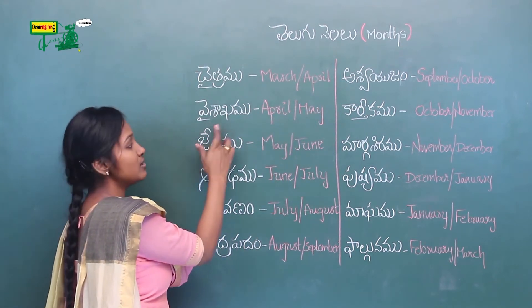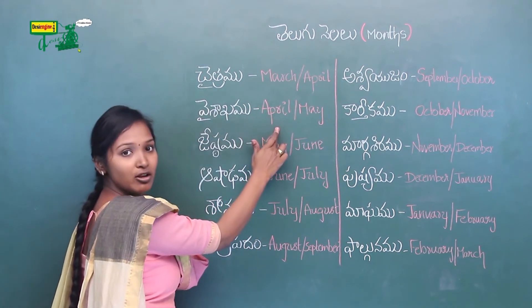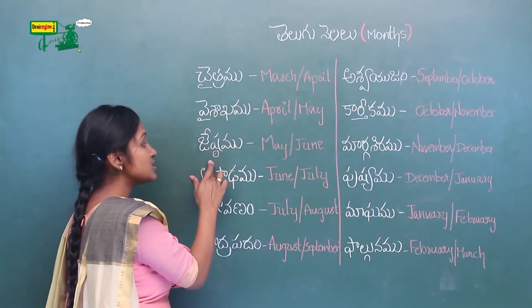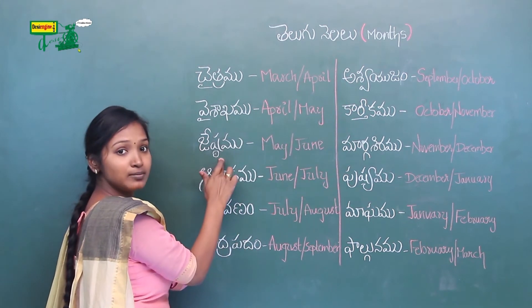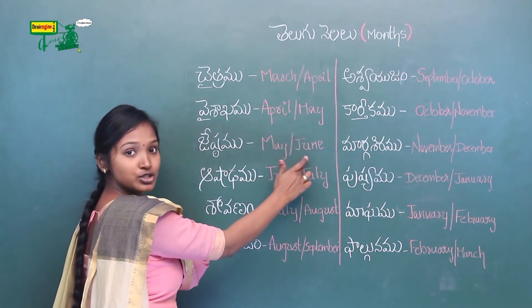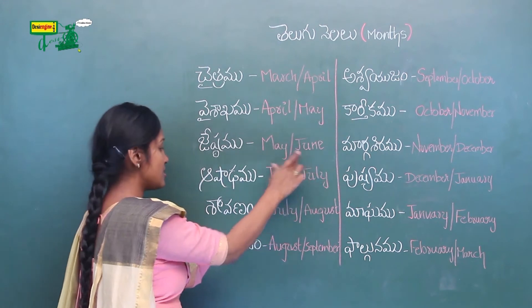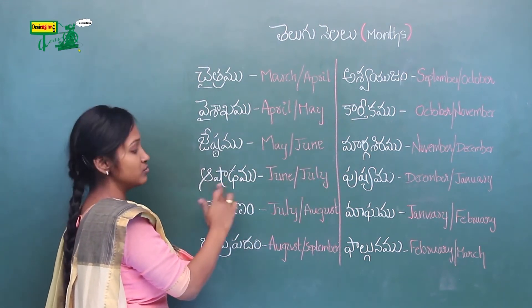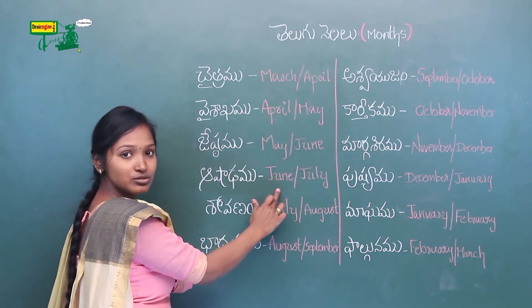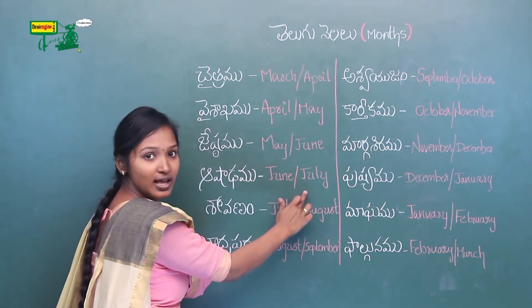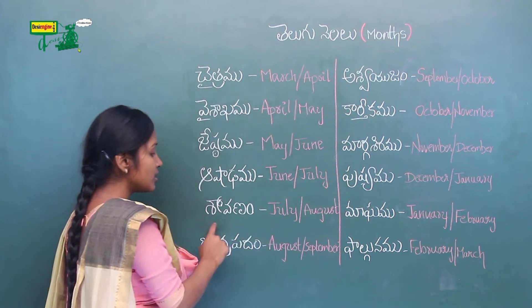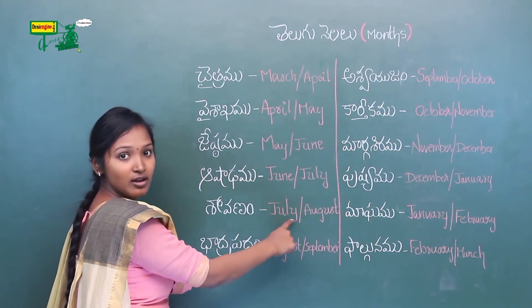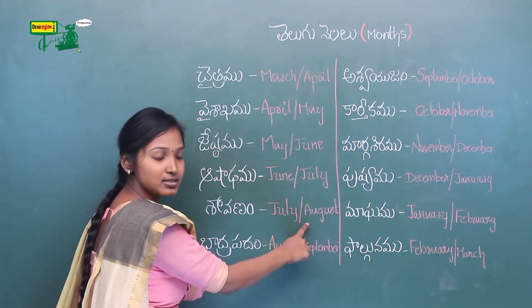Vaisakamu is April or May. Jeshitamu is May or June. Aashadhamu is June or July. Shravanamu is July or August.